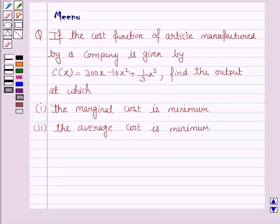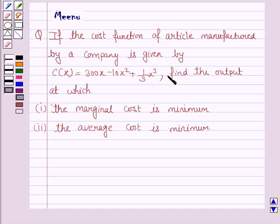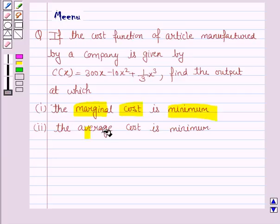Hello students, let's work out the following problem. It says: if the cost function of an article manufactured by a company is given by C(x) = 300x minus 10x squared plus 1/3 x cubed, find the output at which marginal cost is minimum and the average cost is minimum.